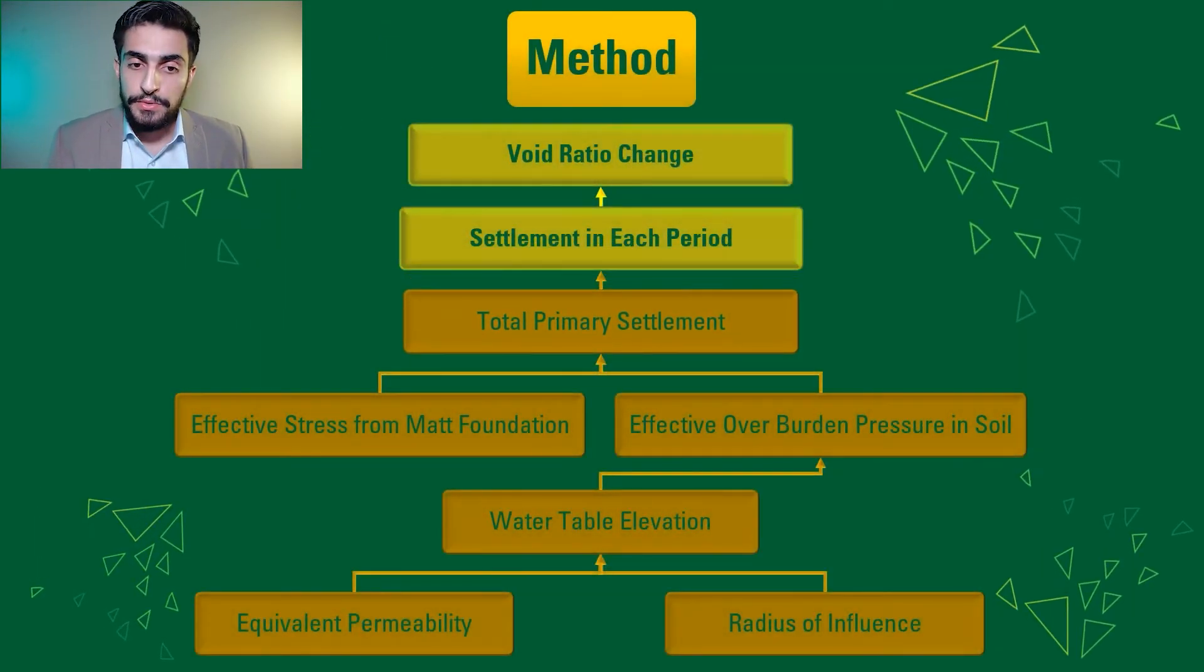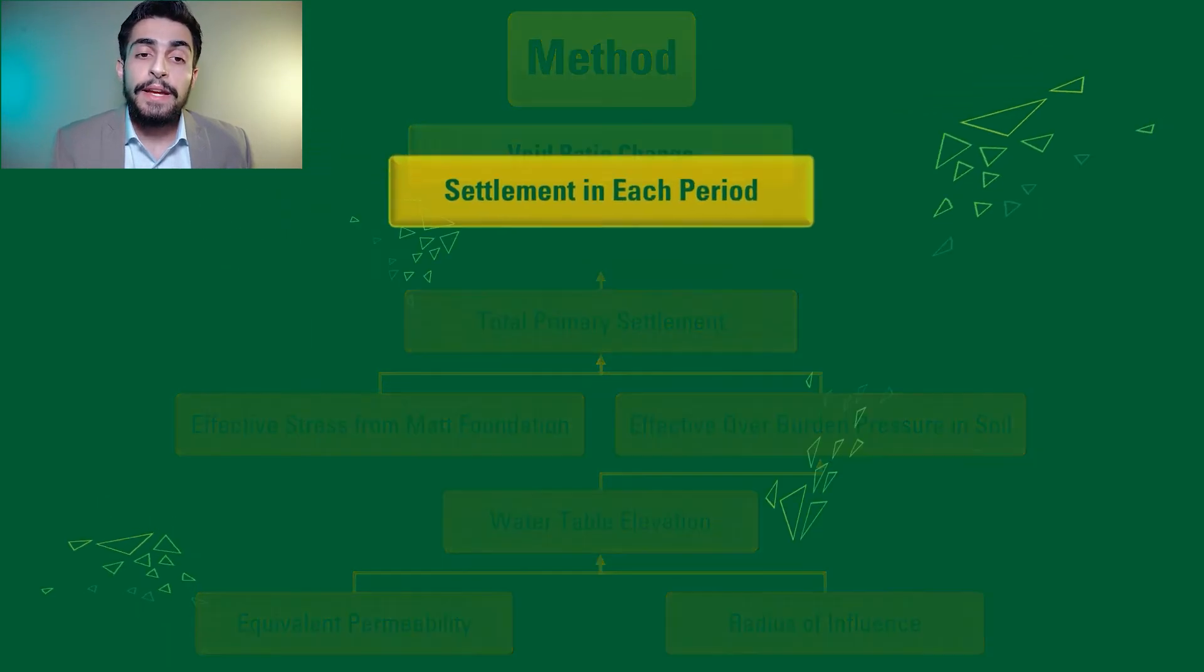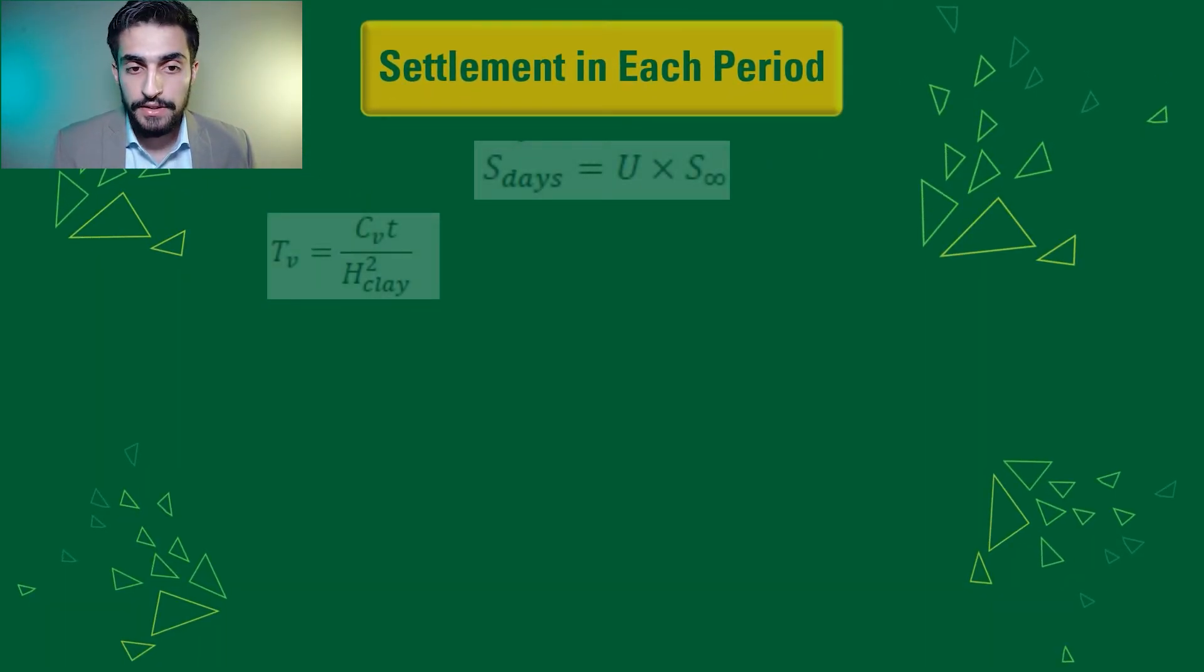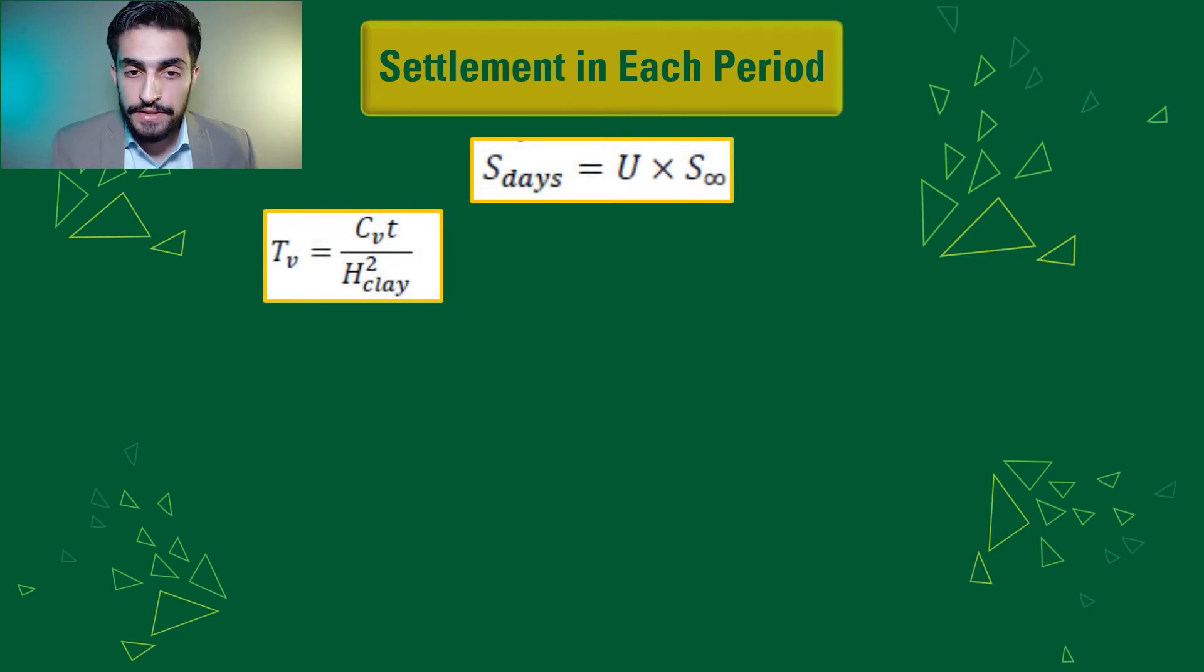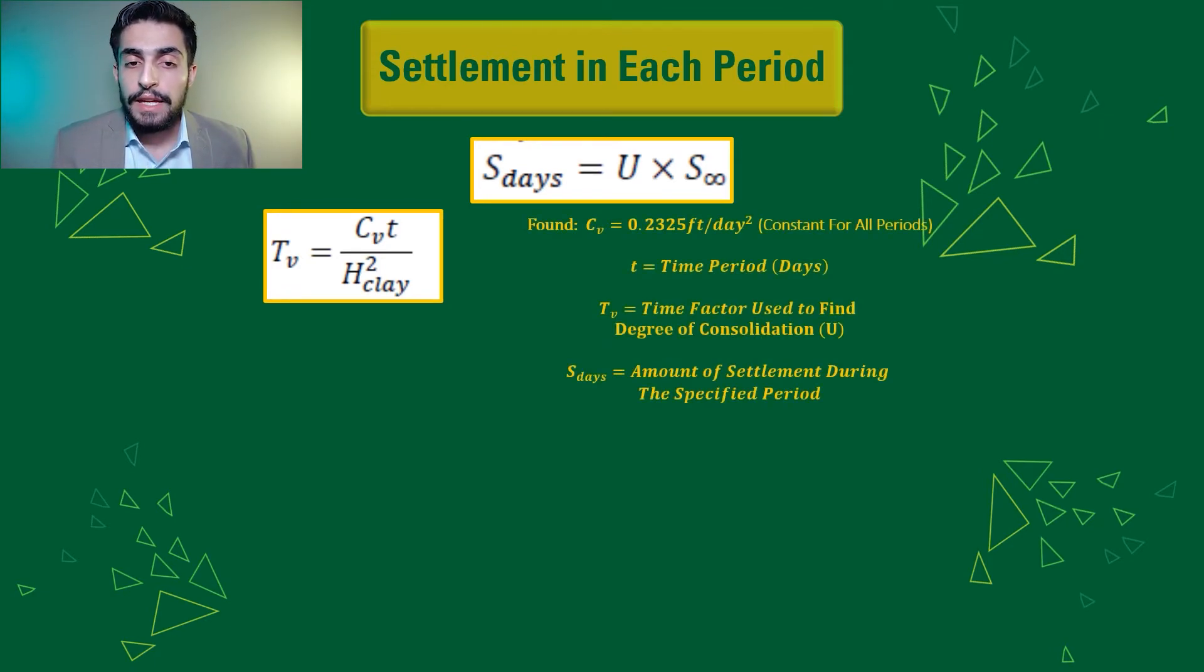And then of course we take the total primary settlement to find the settlement during the period of time given, which is found through the degree of consolidation U multiplied by the total primary settlement.